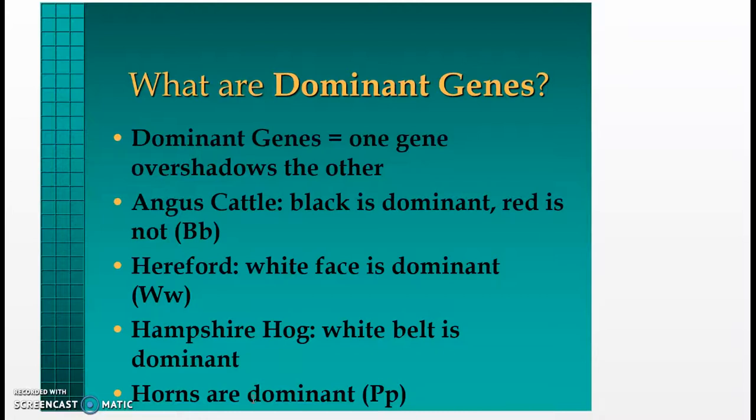What are dominant genes? Dominant genes are one gene that overshadows all others. In Angus cattle, black is dominant and red is not. A uppercase B and a lowercase b — the uppercase B represents black and the lowercase b represents red. Whenever a cattle's genetic makeup is uppercase B and lowercase b, the black will always overshadow the red, and that animal will be black. In Hereford cattle, white face is dominant — uppercase W and lowercase w is still white-faced.